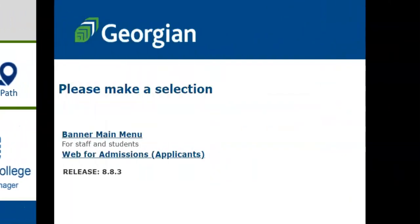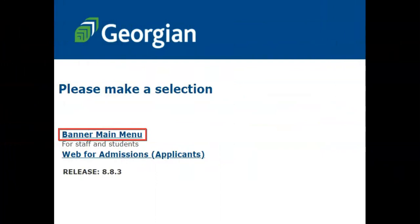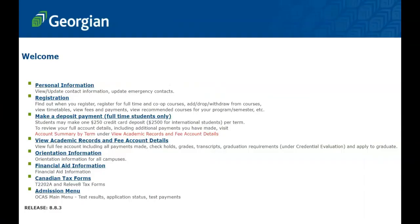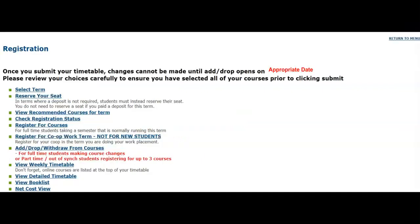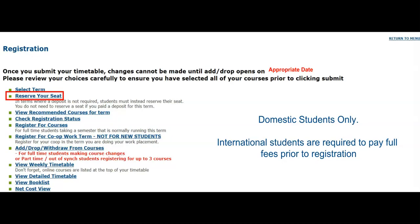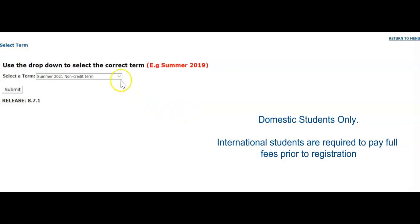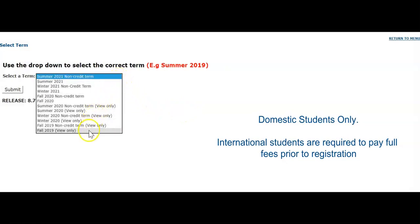Once you're logged into Banner, select Banner Main Menu, then select Registration. As previously mentioned, if you have not paid a deposit this semester, you will be required to reserve your seat before being able to select a timetable. Use the drop-down menu to select the appropriate term, then click Submit.